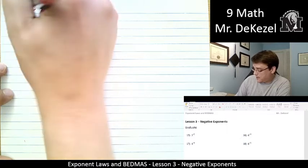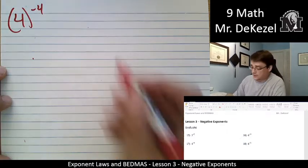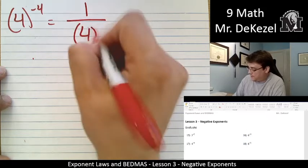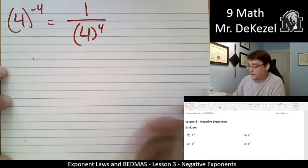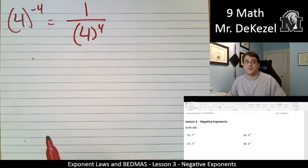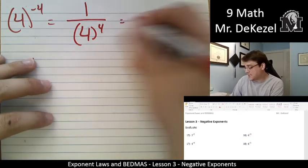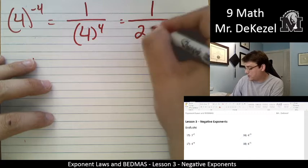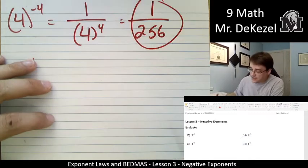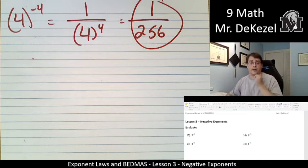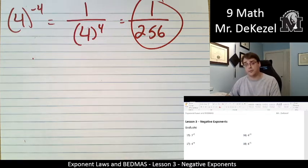4 to the power of negative 4. So that is 1 over 4 to the power of 4. 4 times 4 is 16, times 4 is 64, times 4 again is 256. So that's 1 over 256. You can go ahead and write these out in terms of multiplying. Definitely encourage it to show your work. But you'll definitely become more familiar with these.